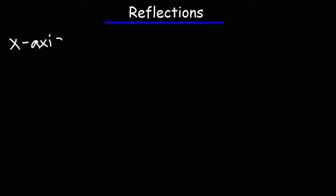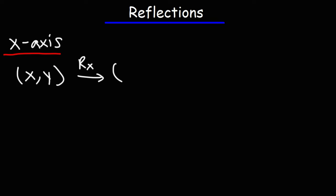Let's start with reflections over the x-axis. Let's say you have a point, the ordered pair (x, y), and you want to reflect that point over the x-axis. The only thing you need to change is the y-value. When you reflect over the x-axis, the x-values stay the same, but the y-values change.